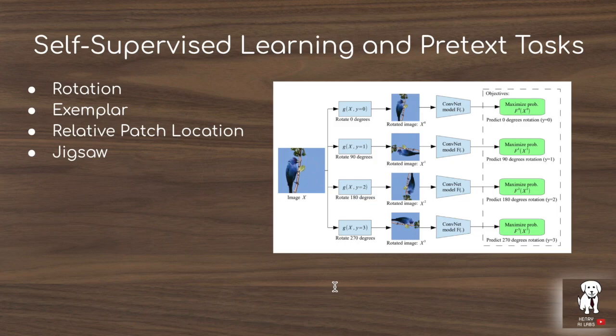The idea behind self-supervised learning is to construct these pretext tasks — how you take unlabeled data and modify it in some way with some kind of label such that you have a supervised learning task to train the model on this unlabeled data. This is most straightforward in natural language processing where you have these massive text datasets from sources like the Colossal Clean Crawled Corpus or Wikipedia.